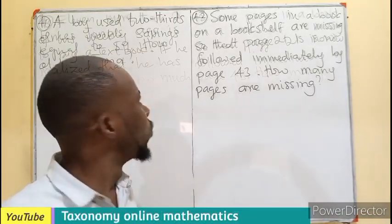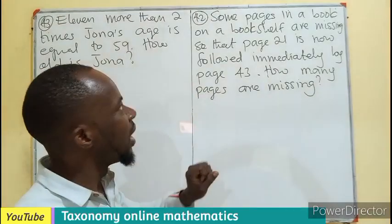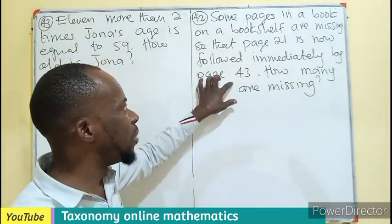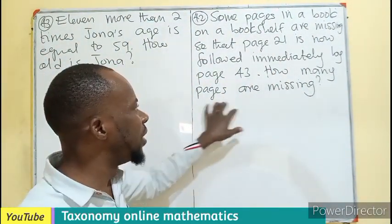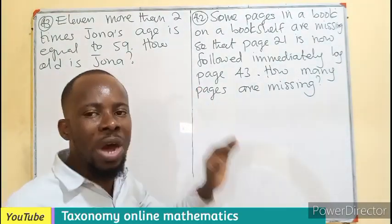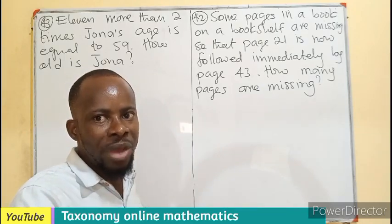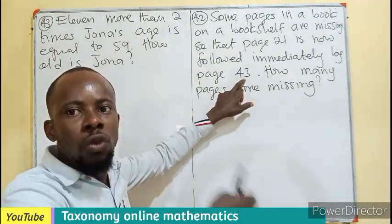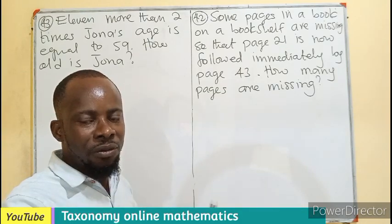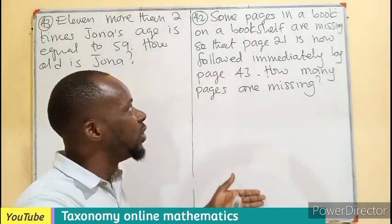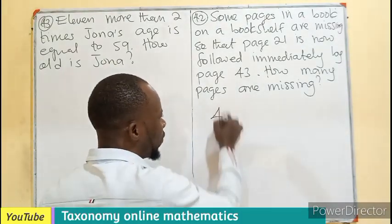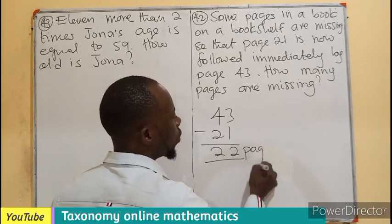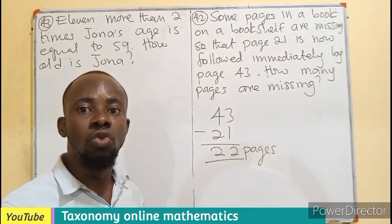Question 42: Some pages in a book are missing so that page 21 is immediately followed by page 42. How many pages are missing? Page 21 is present and page 42 is present, so we look for the pages between them. The count of missing pages is from 22 up to 41. That is 43 minus 21 equals 22, so 22 pages are missing.